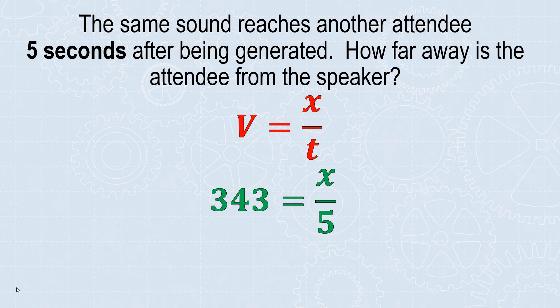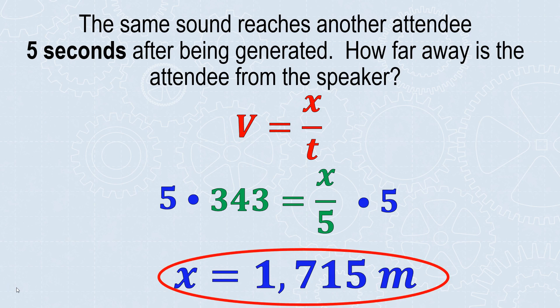This is a one-step equation. What's happening to my variable? I'm taking x and dividing it by 5. To undo that, I multiply both sides by 5. Five times 343 gives a distance of 1,715 meters, which makes sense. At 10 meters, we had less than a second. So if we have 5 seconds for the sound to reach, it's going to be a much larger distance.